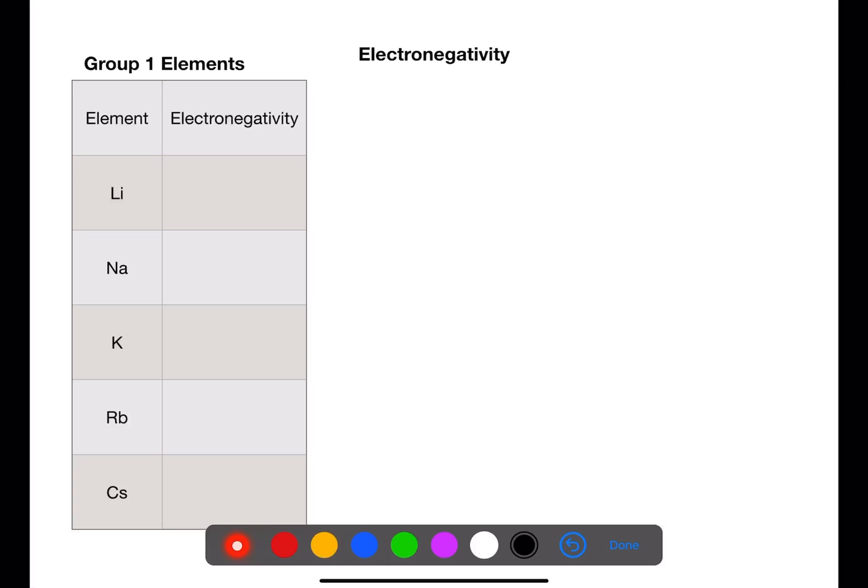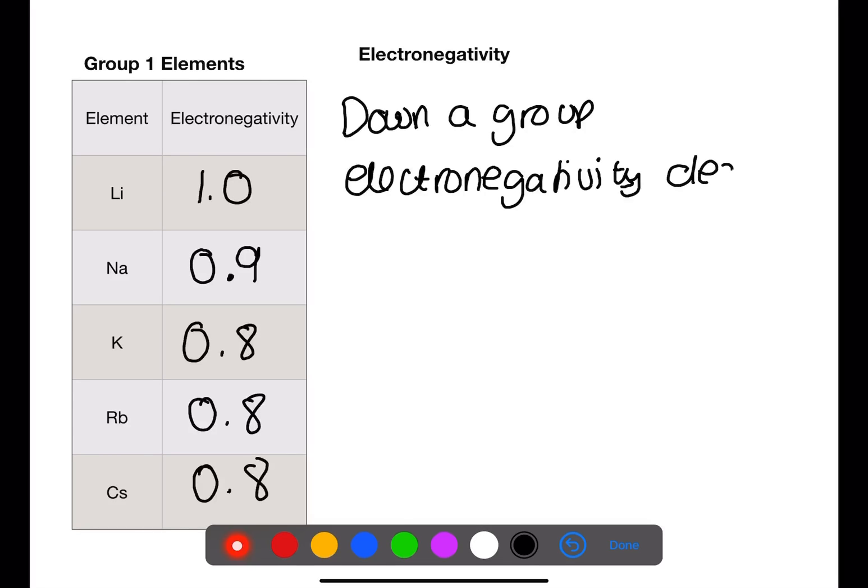Pause the video now and use your data book to find the electronegativity of the group 1 elements. Lithium has an electronegativity of 1.0. Sodium has an electronegativity of 0.9. And potassium, rubidium and caesium have an electronegativity of 0.8. Down a group, electronegativity decreases. This is because of the screening or shielding effect.